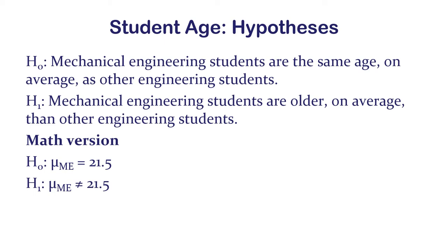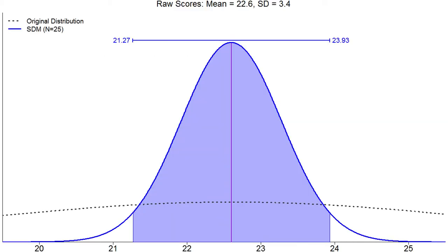The null hypothesis: mechanical engineering students' true population mean is 21.5. The alternative: their true population mean is not 21.5. Now here's the data — my confidence interval is 21.3 to 23.9.